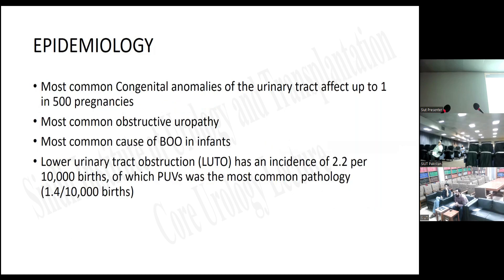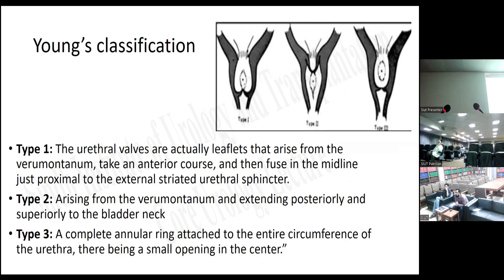Regarding epidemiology, it is the most common congenital anomaly of the urinary tract, affecting up to one in 500 pregnancies. It is the most common obstructive urethral anomaly and the most common cause of bladder obstruction in infants. Lower urinary tract obstruction has an incidence of 2.2 per 10,000 births, of which posterior urethral valve is the most common pathology.